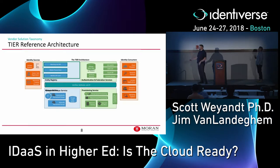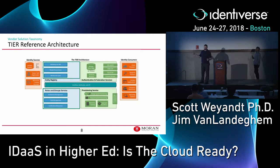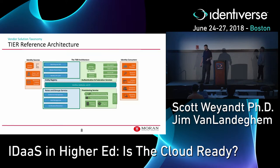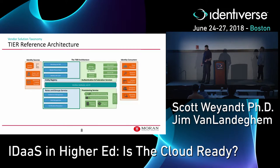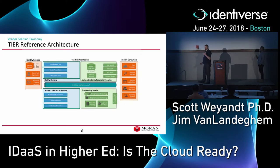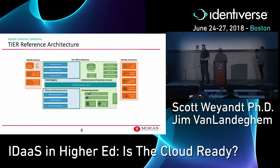We also changed the name of the roles and group service — it used to be called just group services. We added clarity because roles classify a specific type of user based on access needs, and groups apply those needs to a specific resource. Included in vendor functionality for this quadrant, we considered entitlement management, role management, and certification attestation. Many of you are familiar with FERPA if you're in higher education — things like FERPA opt-out policies or checkboxes when resetting a password are the kinds of things we consider in the roles and group services quadrant.